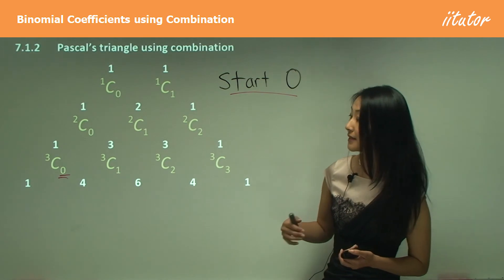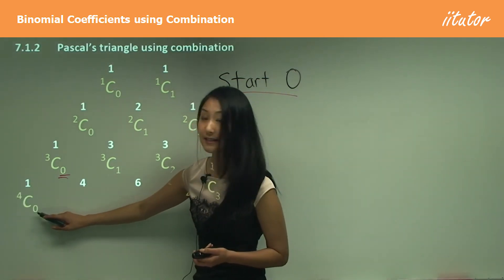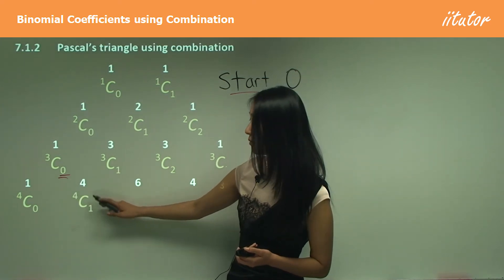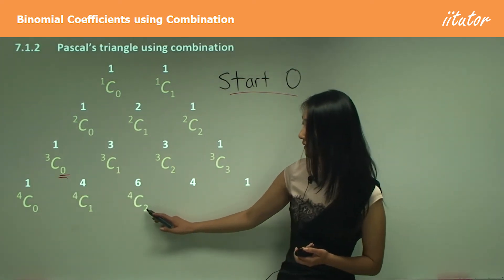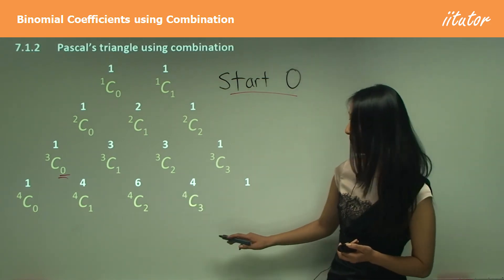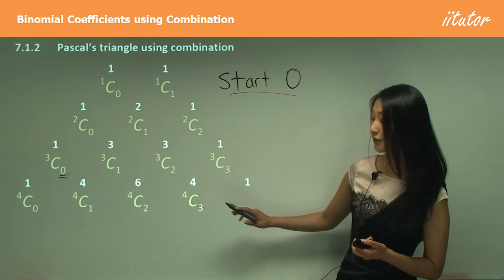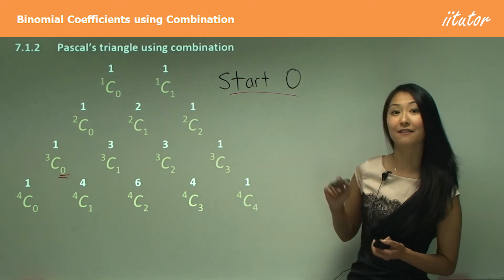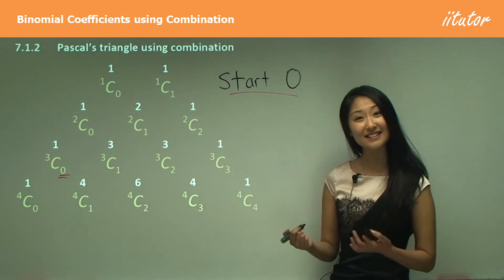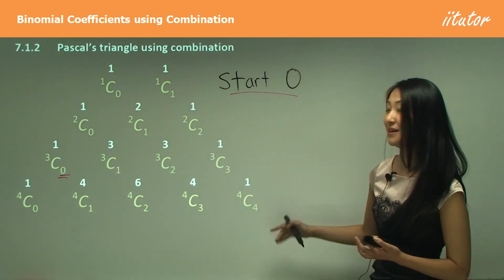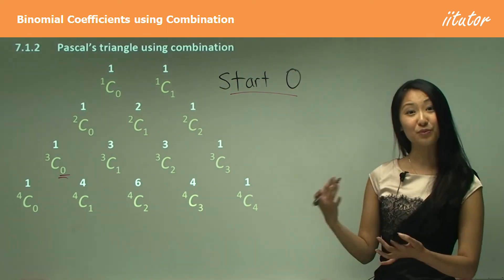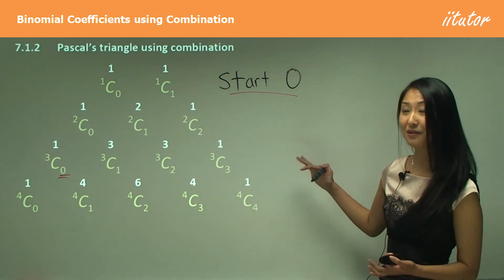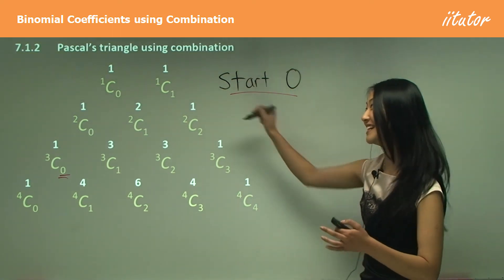So we know that because this is used for the index of 4, that means we're going to start off with 4C0 as our first term. And then 4C1 will be our second term. Add another one, 4C2 becomes our third term, 4C3 our fourth term, and finally 4C4 as our fifth term. So this is how we use combination to work out these numbers without writing it all out.